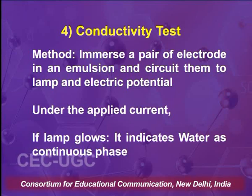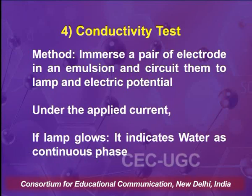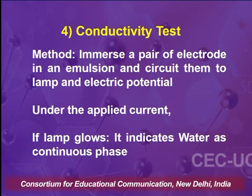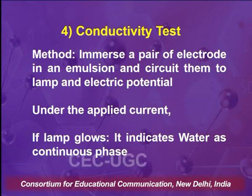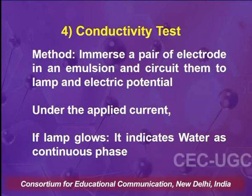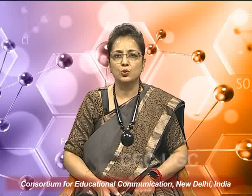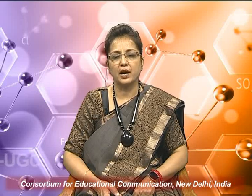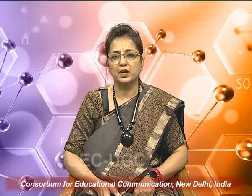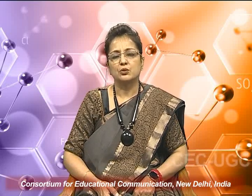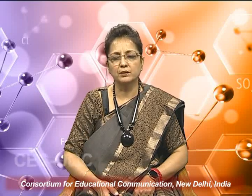For the methodology of the conductivity test, we need a pair of electrodes. The emulsion system is taken in a beaker, the pair of electrodes is immersed in the emulsion, and a circuit is created with a lamp and an electric potential. If current is applied and the lamp glows, it indicates water as the continuous phase and the emulsion is identified as oil-in-water type — based on the simple principle of good conductivity by water when current is passed.